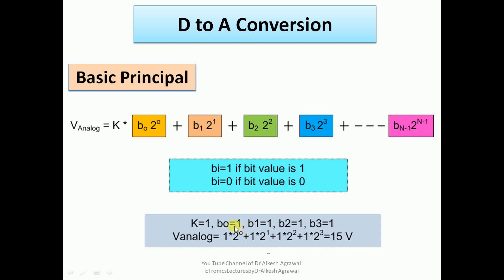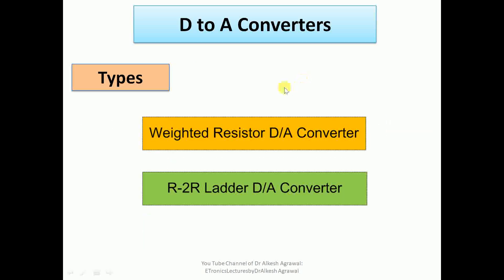A simple example: if all bits are equal to 1, that is b0=1, b1=1, b2=1, b3=1, the analog value is calculated as 1×2⁰ + 1×2¹ + 1×2² + 1×2³, which comes out to be 15 volts. So the bit value 1111 is converted into its analog equivalent of 15 volts. This basic principle is used to design different types of digital to analog converters.